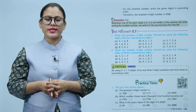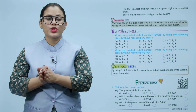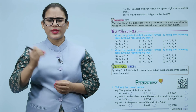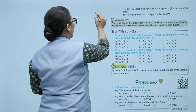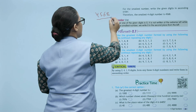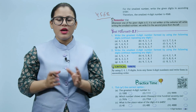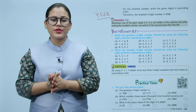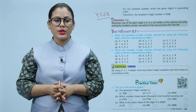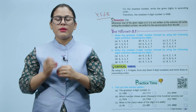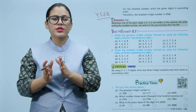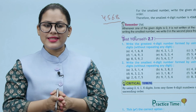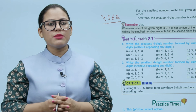For the smallest number, write the given digits in ascending order. Therefore the smallest four digit number is 4568. Remember that whenever one of the given digits is zero, it is not written at the extreme left. While writing the smallest number, we write zero in the second place from the left. Okay children, niche aapko exercise di gai hai — greatest aur smallest number form karna hai, iski practice aap khud se karenge.